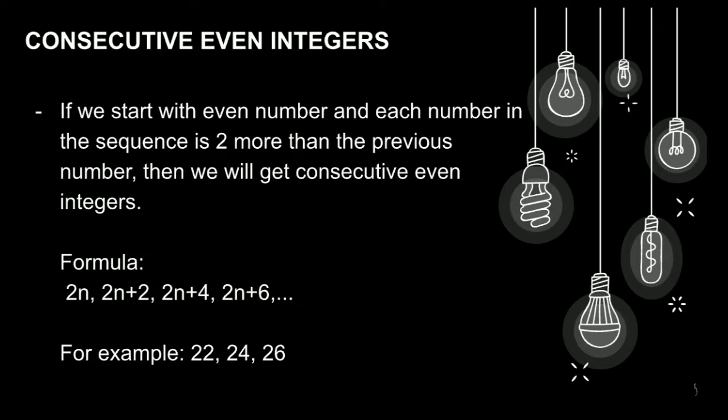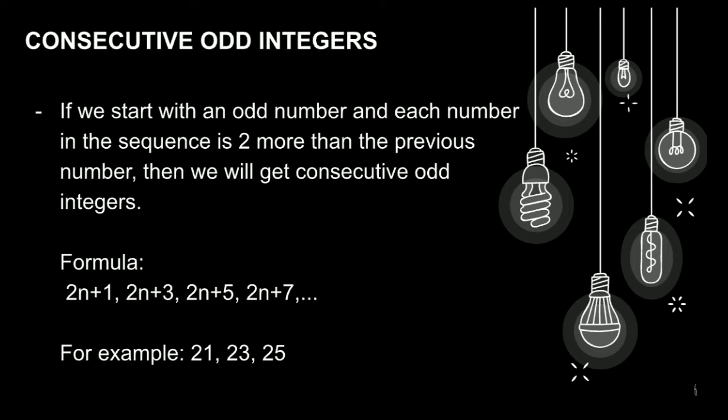Next, we have consecutive even integers. So if we start with even number, and each number in the sequence is 2 more than the previous number, then we will get the consecutive even integers. So here is the formula: 2n, 2n+2, 2n+4, 2n+6, and so on and so forth. For example, 22, 24, and 26. At kung meron tayong consecutive even integers,